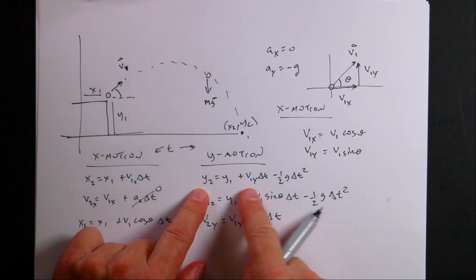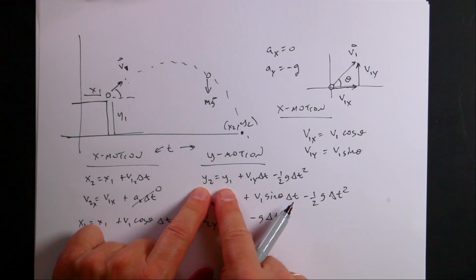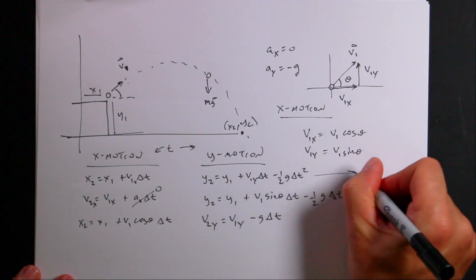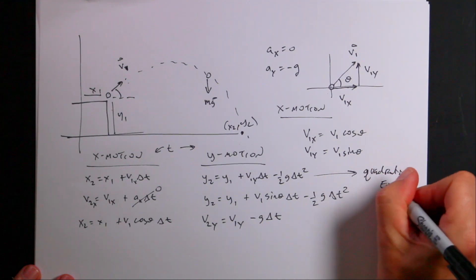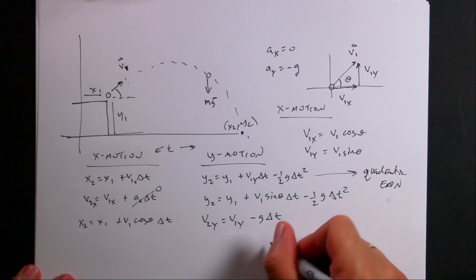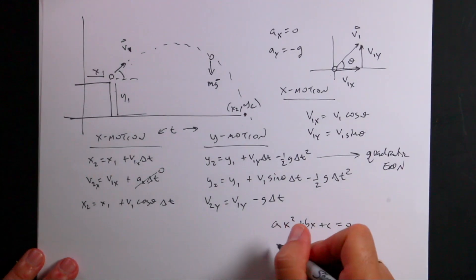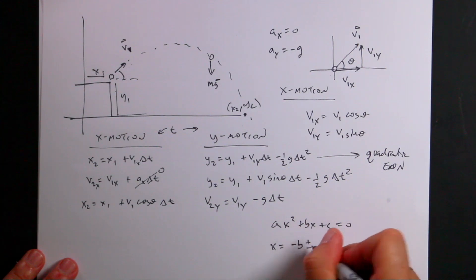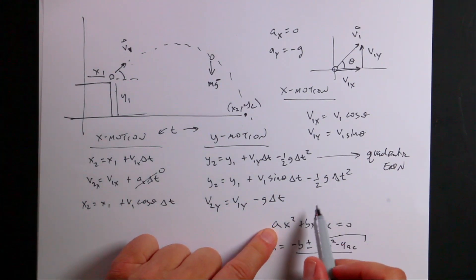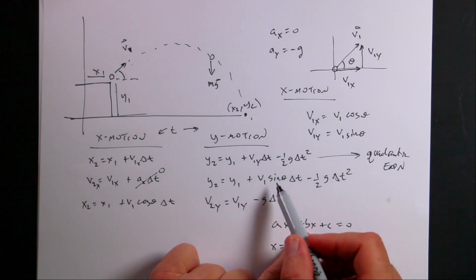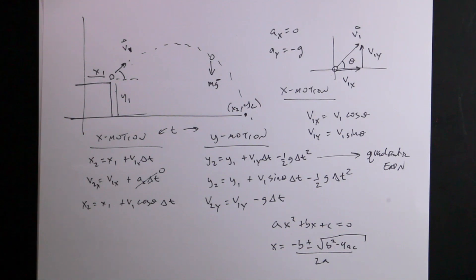If the initial Y velocity is not zero, you'll get a constant term, a term with T, and a term with T squared, so you'll need the quadratic formula. If AX squared plus BX plus C equals zero, then X equals negative B plus or minus the square root of B squared minus 4AC, all over 2A. In this case, A would be negative one-half G, B would be V1 sine theta, and C would be the constant. That's enough to get you started in all the kinematics.